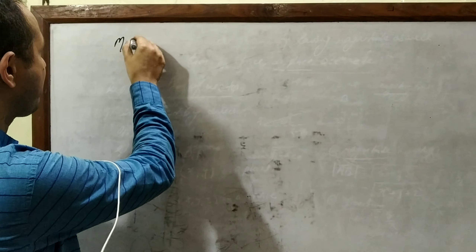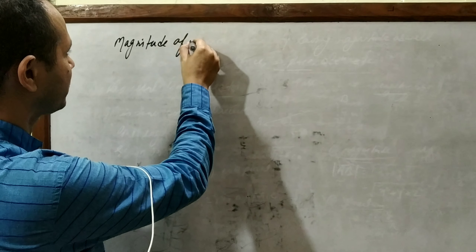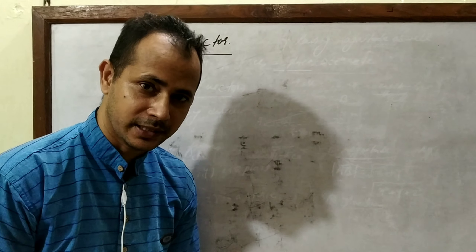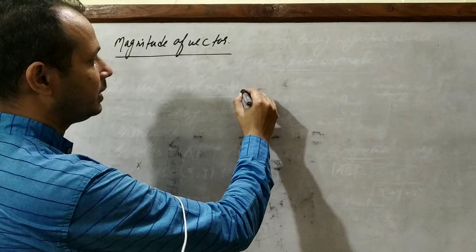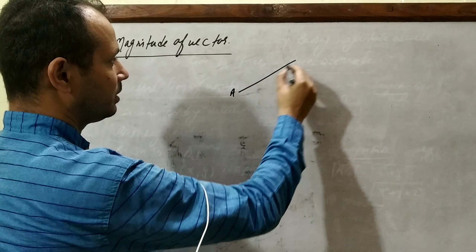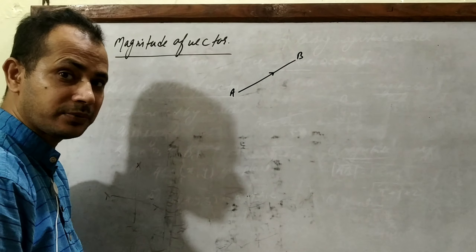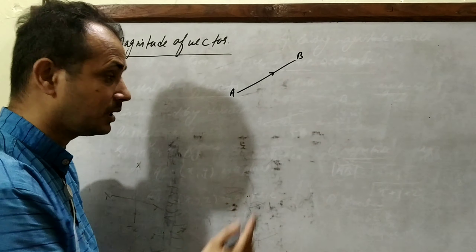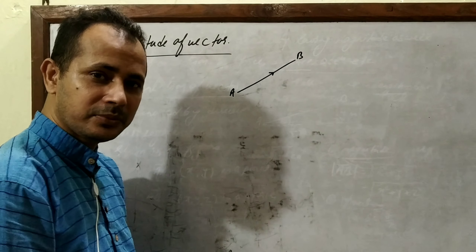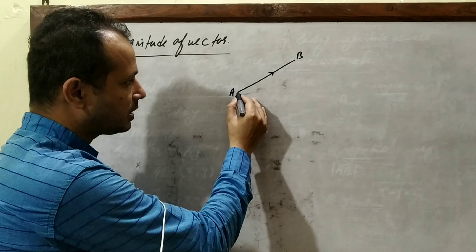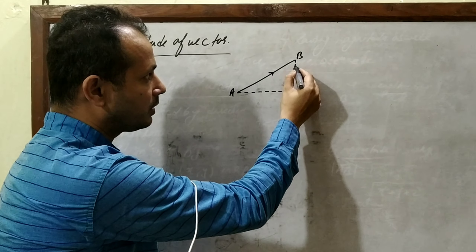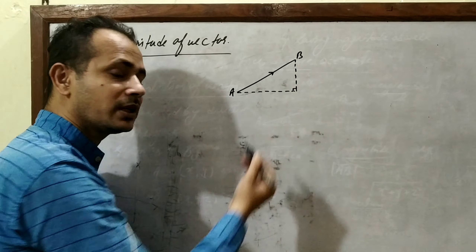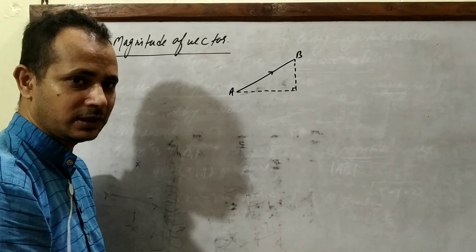Now we need to know the magnitude of a vector. Magnitude of a vector means the length of the line which represents the vector. If we draw a directed line segment AB from A to B, the length of AB is the magnitude of vector AB. To find the length of the vector, we can take help of the Pythagorean theorem. This portion is the x-component and this portion is the y-component.